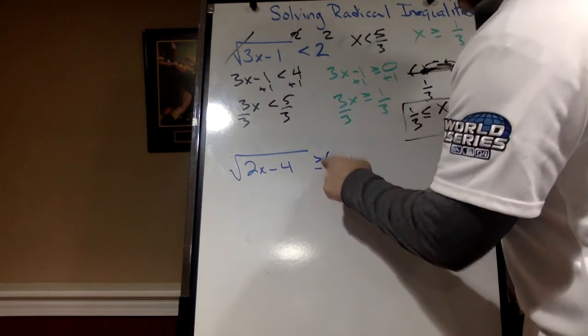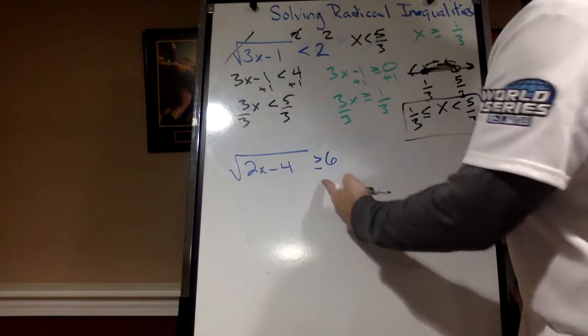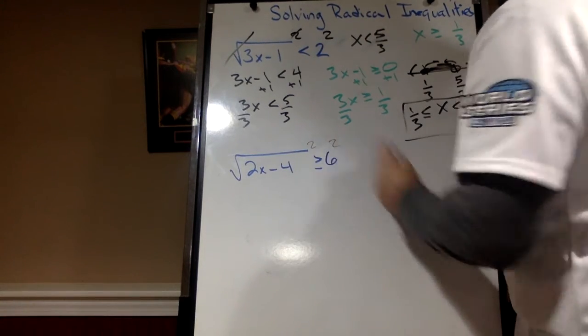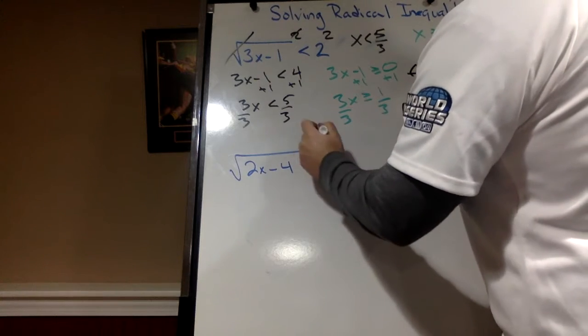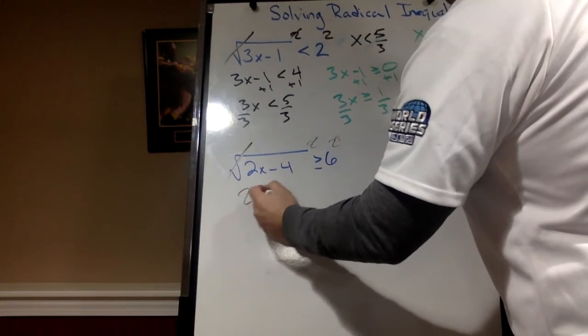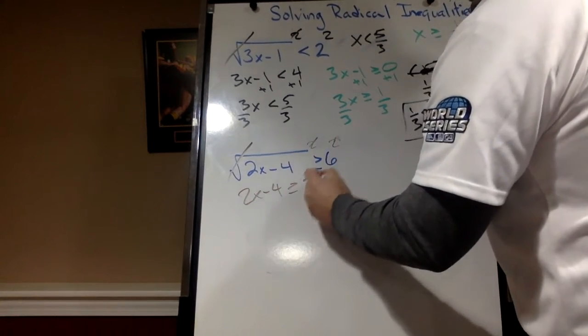Same thing. But look, we flipped. We've got a greater than and or equal to. Square both sides. Oops. Don't cross out that one. 2x minus 4 is greater than or equal to 36.